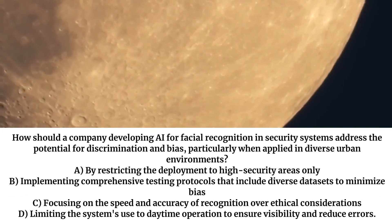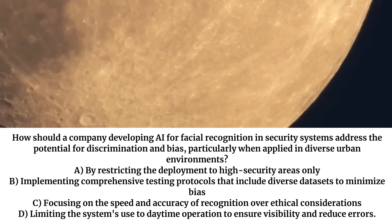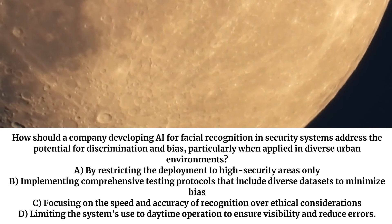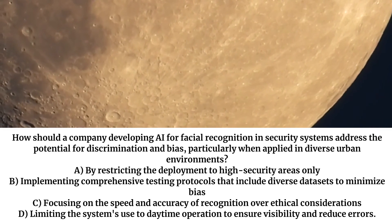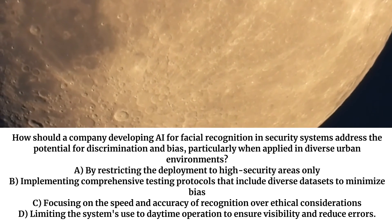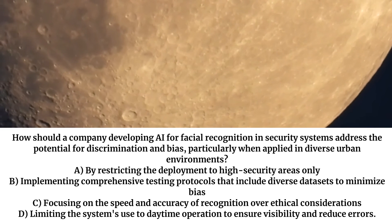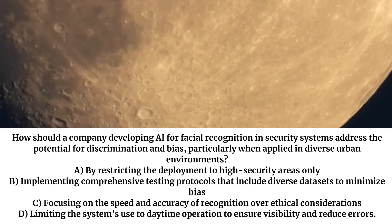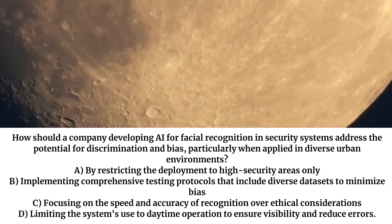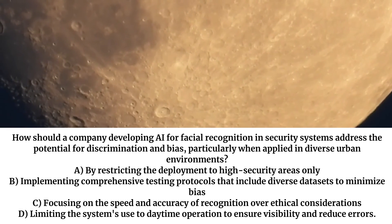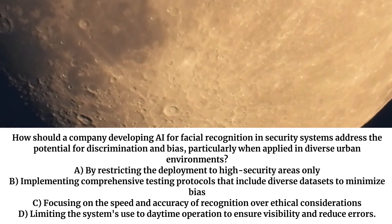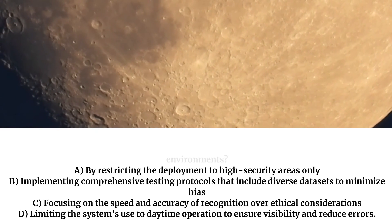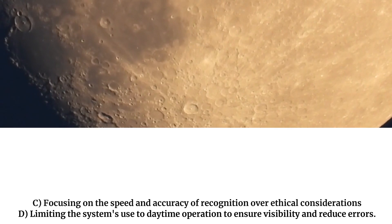How should a company developing AI for facial recognition in security systems address the potential for discrimination and bias, particularly when applied in diverse urban environments? A. By restricting the deployment to high security areas only. B. Implementing comprehensive testing protocols that include diverse datasets to minimize bias. C. Focusing on the speed and accuracy of recognition over ethical considerations. D. Limiting the system's use to daytime operation to ensure visibility and reduce errors.